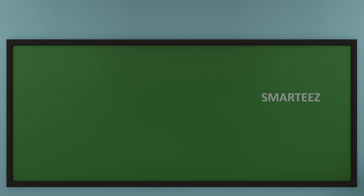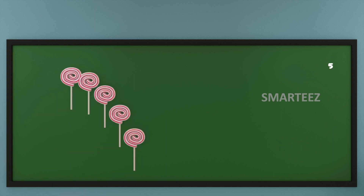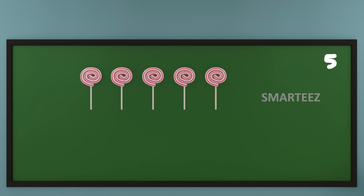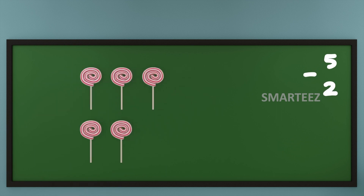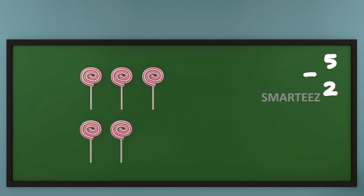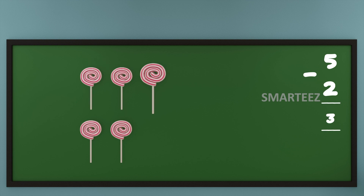Let's take a look. That's five candies in total. Let's subtract two candies out of it. That's one candy and that's the second candy. What we have left is one, two, and three candies.